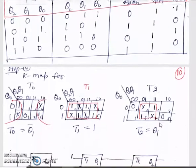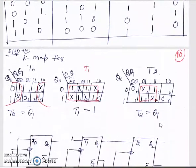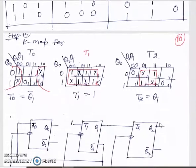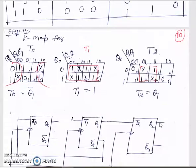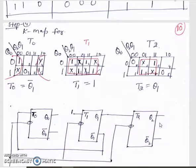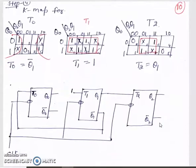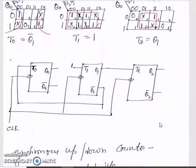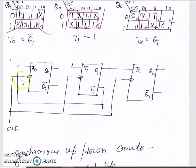We draw K-maps for the minimal expressions for T0, T1 and T2 — the inputs of the T flip-flops. Finally, we draw the logic diagram for this counter with 3 T flip-flops and a synchronous clock given to all flip-flops at the same time.